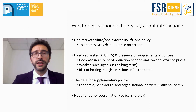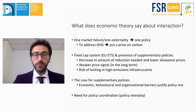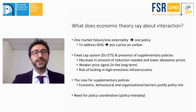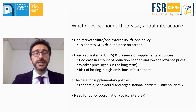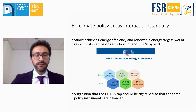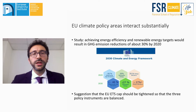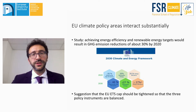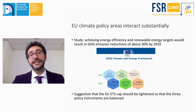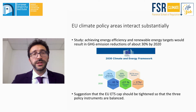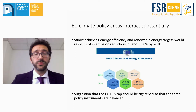However, in standard economic theory there are also strong cases for supplementary policies — that is the case whenever we have economic, behavioral, or organizational barriers. All these justify the introduction of a broader policy mix. Overall, what theory says is you need policy coordination. Studies have shown that if we do achieve the target reduction under the energy efficiency and renewable energy policy, that will lead to even an excess of 10% on top of the greenhouse gas reduction targets. That obviously suggests we should coordinate policies, which would lead in fact to an adjustment of the EU ETS cap.